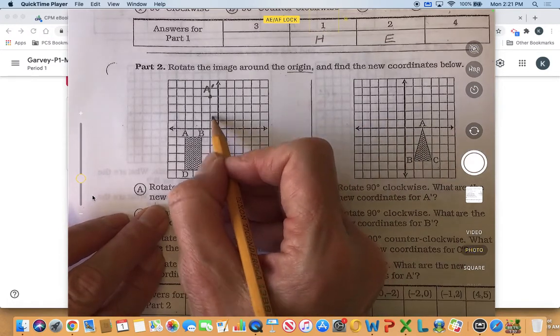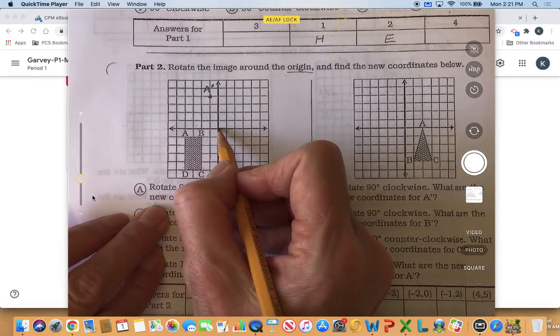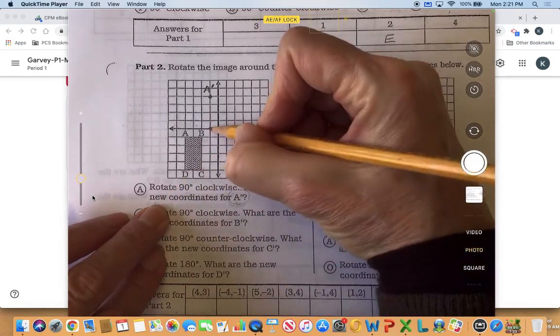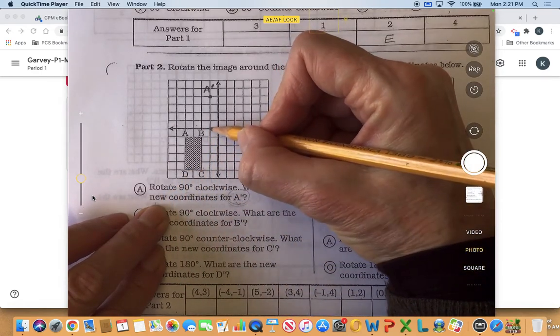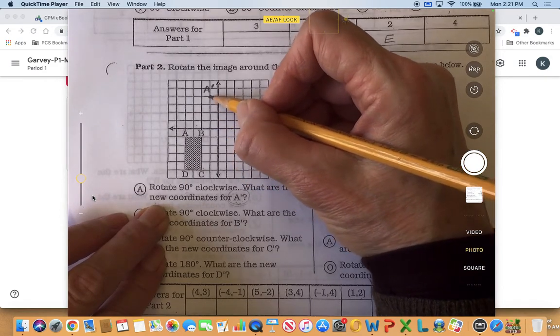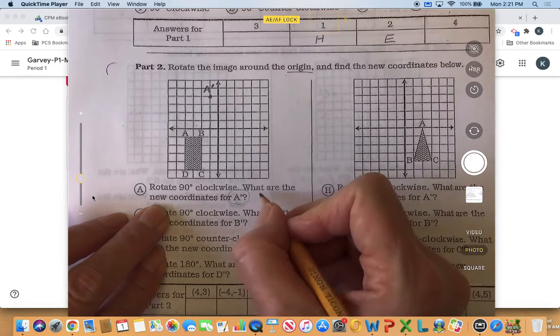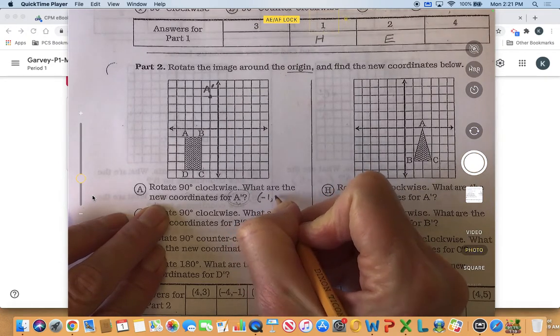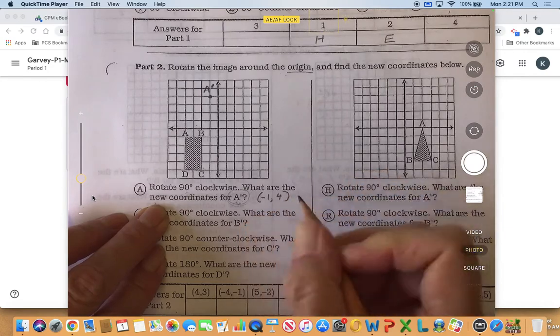So now I just need to find what the coordinates are for a prime. The x coordinate is negative 1, and then the y is going to be positive because I have to go up 1, 2, 3, 4. The y is a positive 4. So the x is negative 1, the y is positive 4.